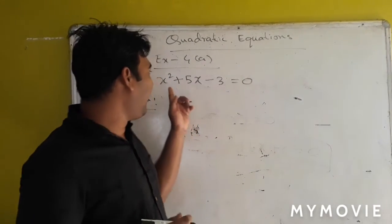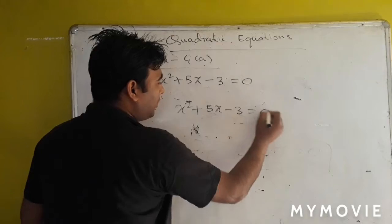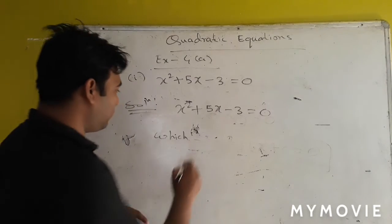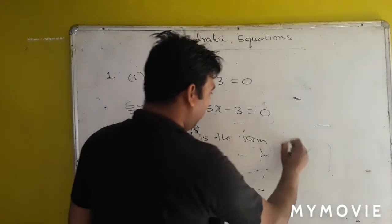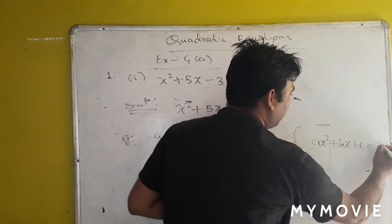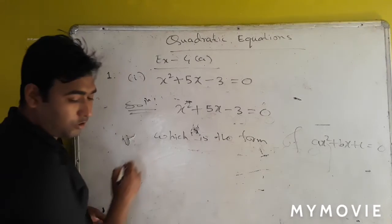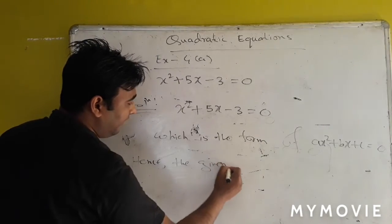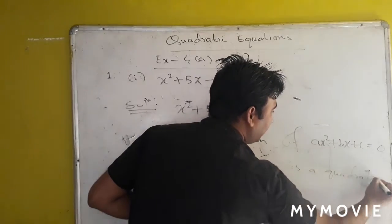So we will check. The given equation is x squared plus 5x minus 3 equals 0. This is in the form of ax squared plus bx plus c equals 0. Therefore, the given equation is a quadratic equation.